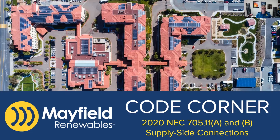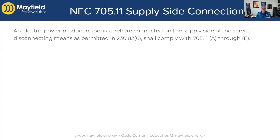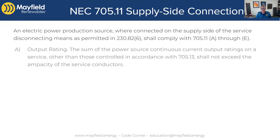Code has now given us some very good rules on how to make these connections where we didn't have them before. So let's jump in and talk about a couple of these. 705.11a is what we're going to focus on first. What it's saying is that an electric power production source, such as a PV system — that's a generic term but it applies to our PV systems — if it's connected on the supply side of the service means, then we have to go through 705.11a through e. And so 'a' is where we're focused.